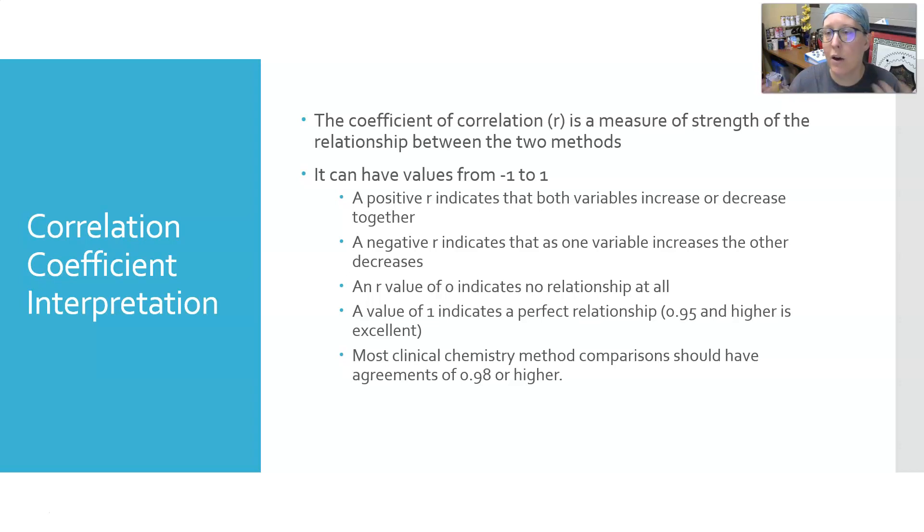You could analyze data on number of minutes somebody exercises and their risk of chronic disease, and predict the correlation that as minutes of exercise per week goes up, risk for chronic disease goes down - that would be a negative r. An r value of zero indicates no relationship, and a value of one indicates perfect relationship. Most clinical chemistry method comparisons should have agreements of 0.98 or higher, especially if you're intending on using the same reference ranges.